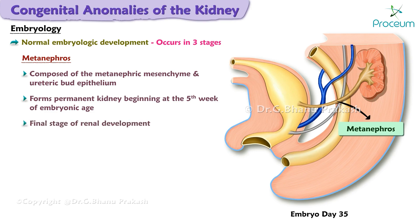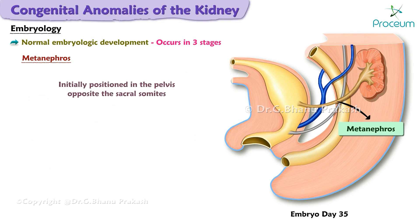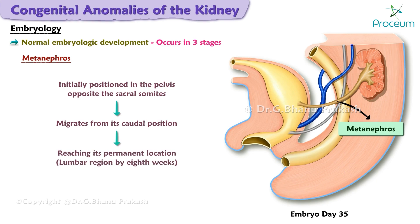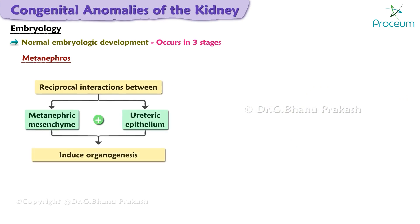The metanephros is first detected at five to six weeks of embryogenesis and begins to function at six to ten weeks, with urine production beginning at nine weeks of embryonic age. The metanephros is initially positioned in the pelvis opposite the sacral somites and migrates from its caudal position, reaching its permanent location in the lumbar region at the eighth week of embryogenesis.